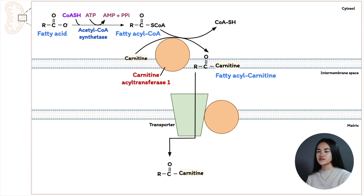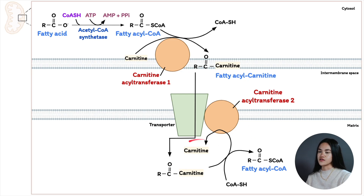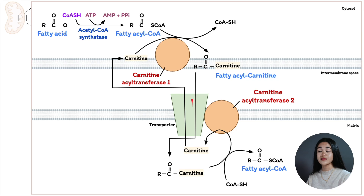Once it's in the matrix, the fatty acyl group is transferred back to CoA — so we're putting the CoA back. This is catalyzed by carnitine acyltransferase 2 (CAT2), which is found in the inner mitochondrial membrane. Now we have free carnitine, and this carnitine goes through the carnitine co-transporter again, moving back to the intermembrane space and outer membrane where it can repeat this process.